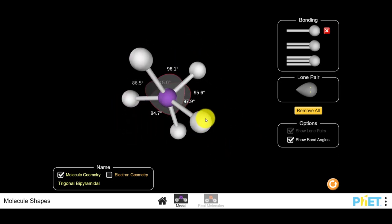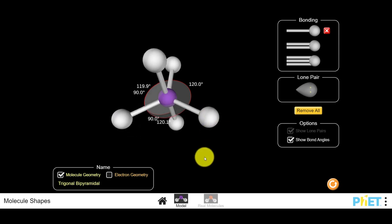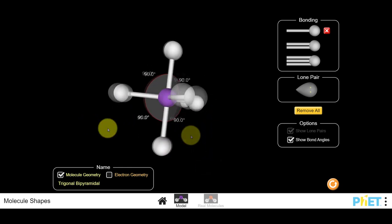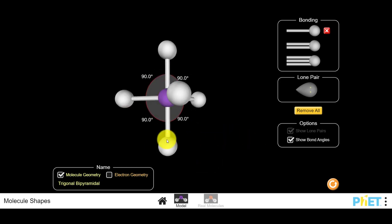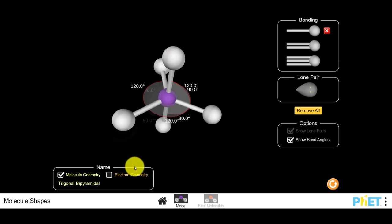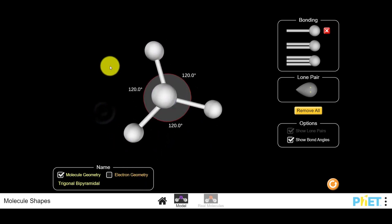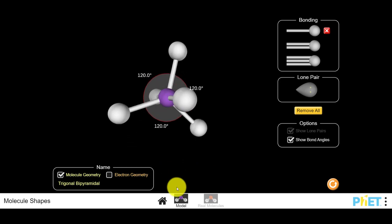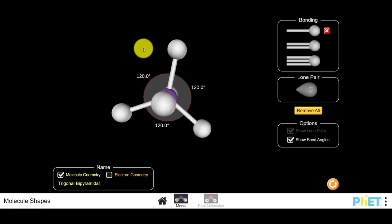Chemists will often refer to these as axial and equatorial bonds. If you think of the trigonal bipyramid spinning around like a top, it could spin on this axis right here. And then if you were to look at it from the top as it was spinning, you could see it rotating around the equator. So the bonds around the equator make a trigonal planar shape, and that's your 120 degree bond angle.